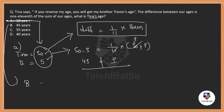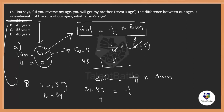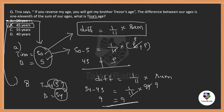Let's try option B: Tina equals 45. If Tina is 45, brother should be 54. The difference is 54 minus 45, which is 9. One-eleventh of their sum: 54 plus 45 is 99, and one-eleventh of 99 is 9. Exactly satisfied — 9 equals 9. So Tina's age is 45 years. Go through the options and check which satisfies the condition, since you have two unknowns and only one expression. Option B is the correct answer.